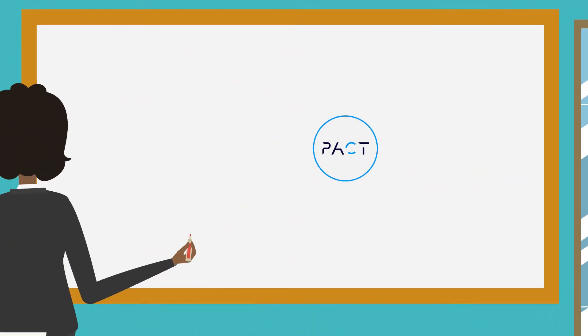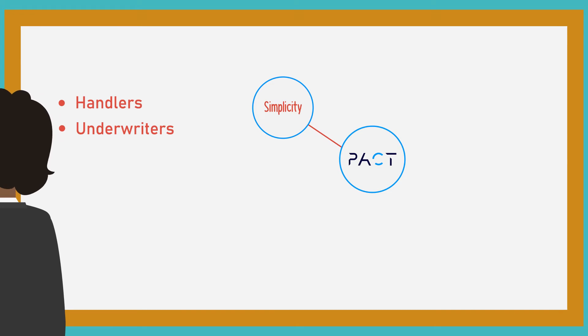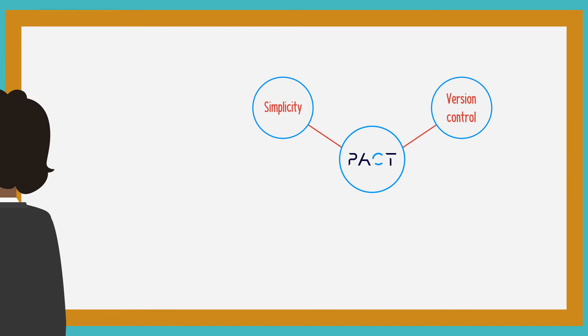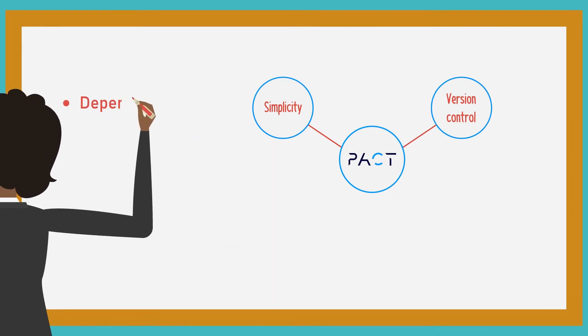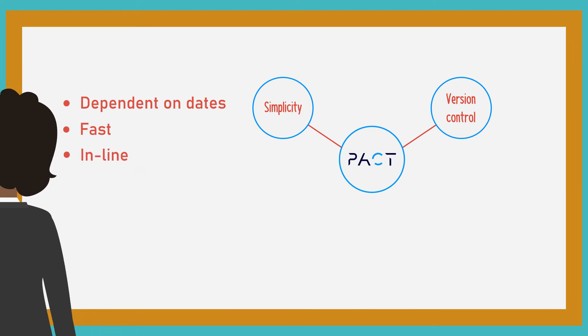PACT's business rules engine simplifies processes for handlers and underwriters, eliminating stressful paperwork discovery. Version control allows delivery to customers dependent on policy dates, meaning decisions are made fast and in line with risk tolerance.